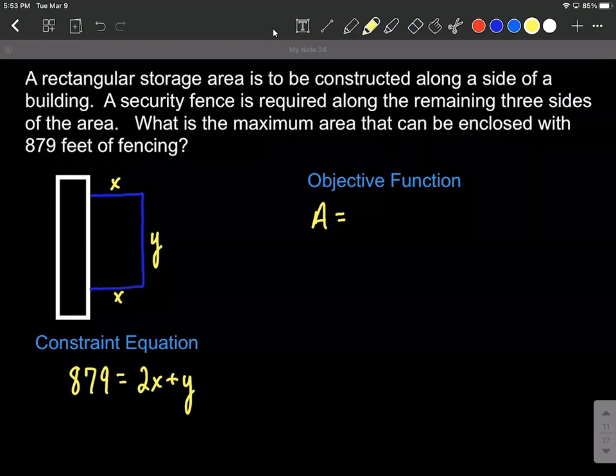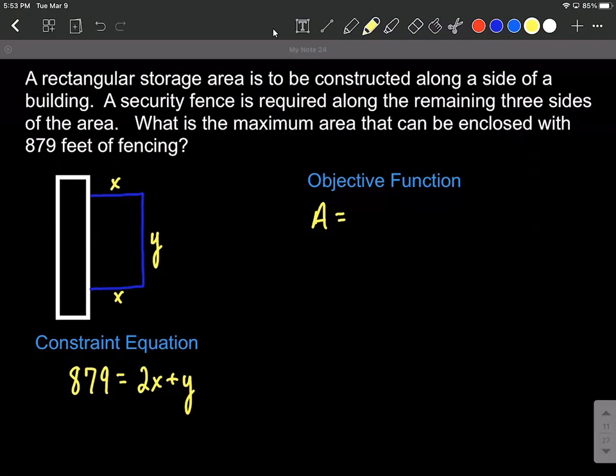So we're done with our constraint equation for right now. Next, let's work on our objective function. This is a function that we're trying to maximize. To maximize this area that we used A for area, we can represent that using X times Y because finding the area of a rectangle is length times width or base times height, and we've represented those with X and Y.